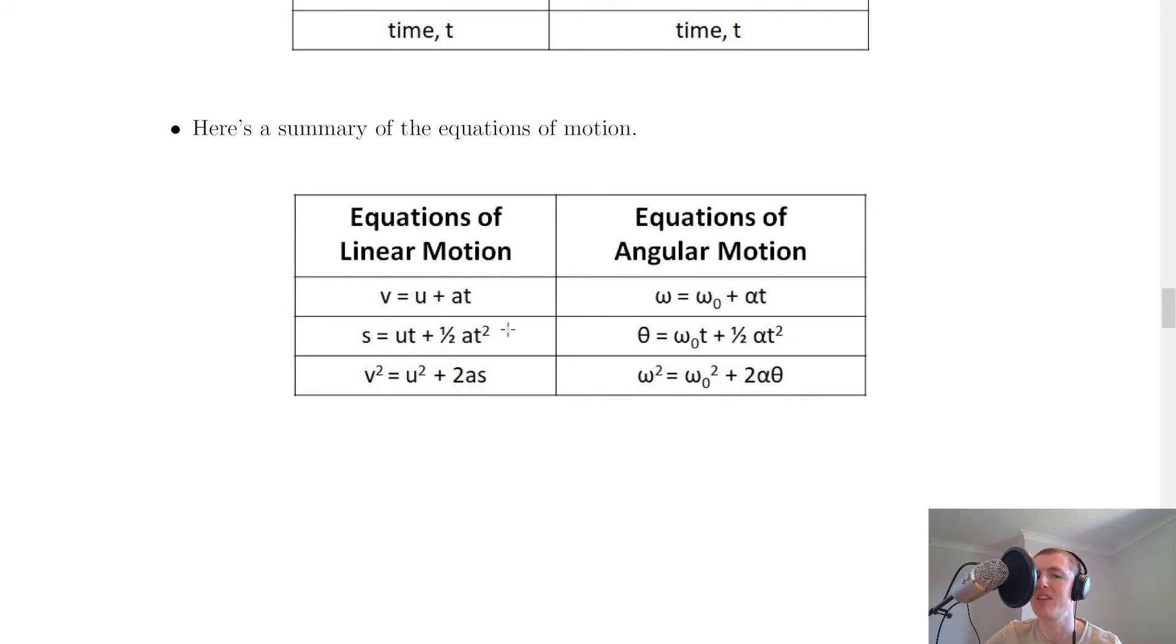We then have s equals ut plus a half at squared for linear motion. And theta equals omega 0 t plus a half alpha t squared for angular motion.